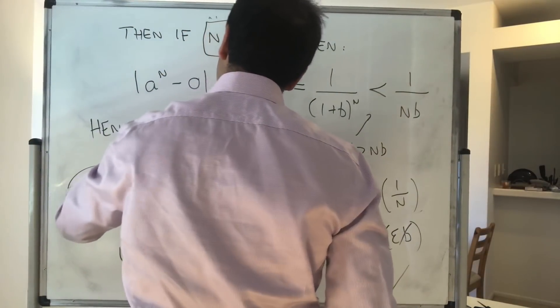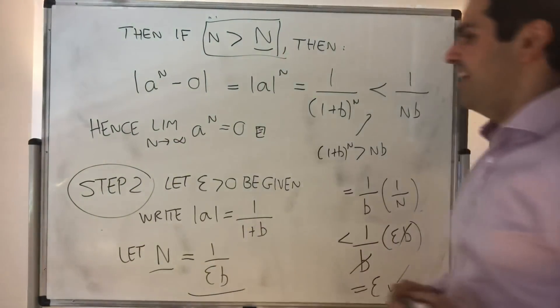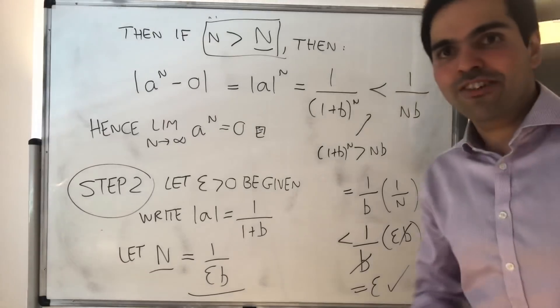limit n goes to infinity of a to the n equals 0. How nice is that? All right. Thank you very much.